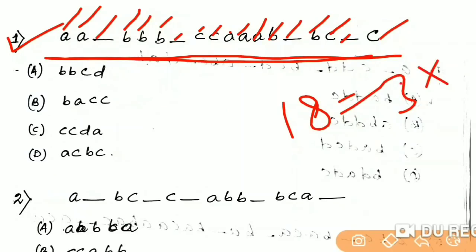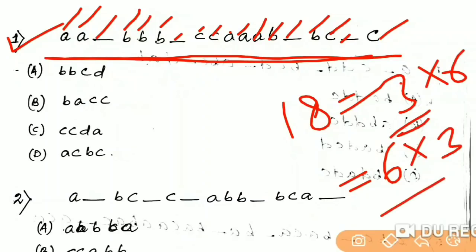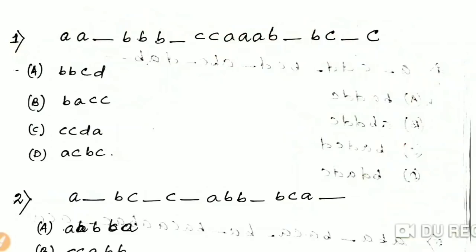3 into 6. So the numbers are 3, 6, 8, 10, 8, 10, 11, 12, 14, 12, 15, 18, 18. So we have to call 6 into 3.